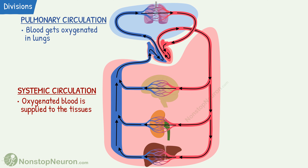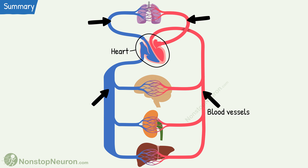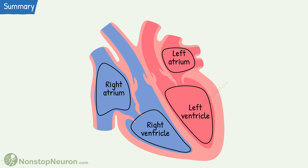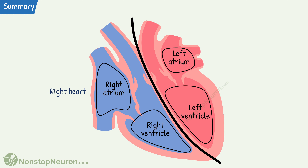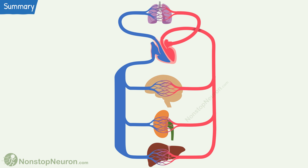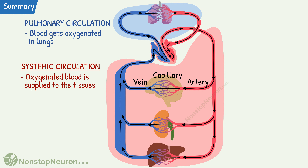So that is all the basics about the cardiovascular system. Now let's have a quick summary. The cardiovascular system is composed of the heart and blood vessels. The heart has four chambers — two atria and two ventricles. The four chambers make two pumps: right heart and left heart. The blood flow in the heart is kept unidirectional with the help of one-way valves. Arteries take blood from the heart to other organs. At capillaries, exchange of substances takes place, and veins take the blood back to the heart. In the systemic circulation, oxygen is delivered to the peripheral tissues, and in pulmonary circulation, the blood gets oxygenated in the lungs.